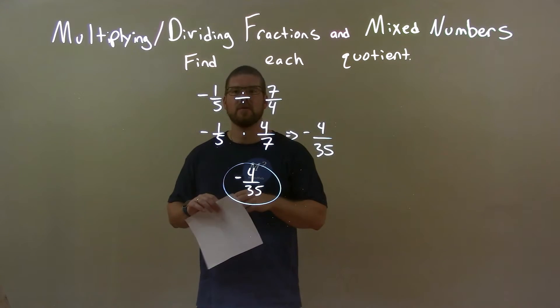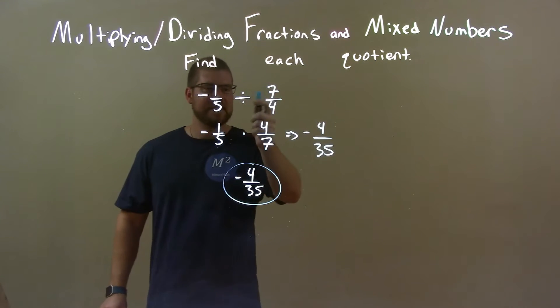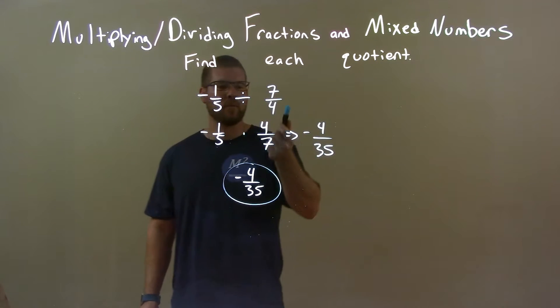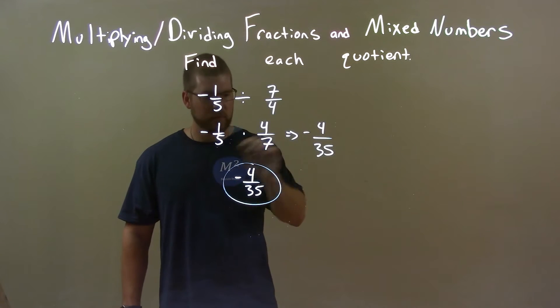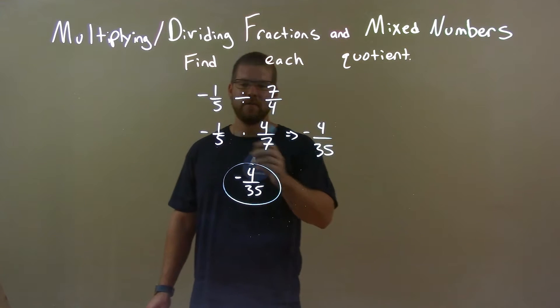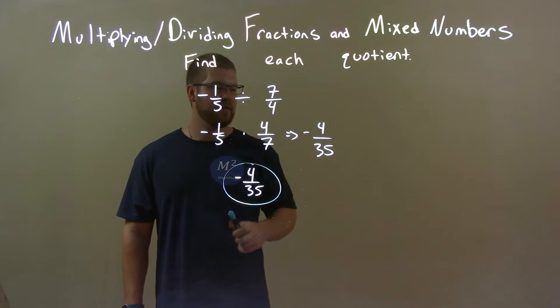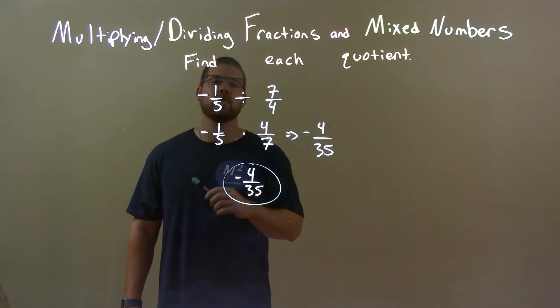So, quick recap. We're given negative one-fifth divided by seven-fourths. Well, I don't like to see division, so I convert that to multiplication. Multiply by four over seven. Multiply across the numerator, multiply across the denominator. And we got four over thirty-five. Negative times a positive is negative. This cannot be simplified. So again, final answer, negative four over thirty-five.